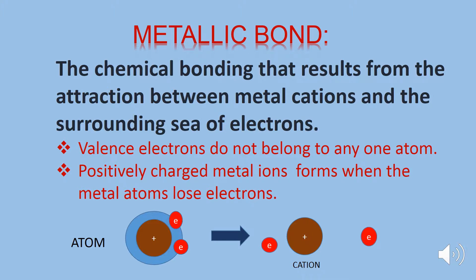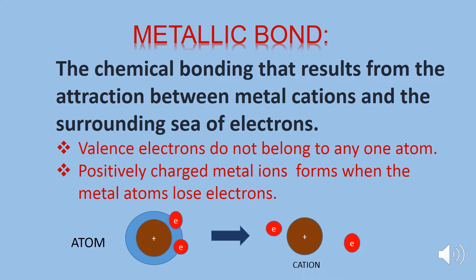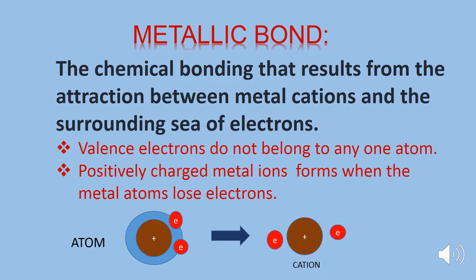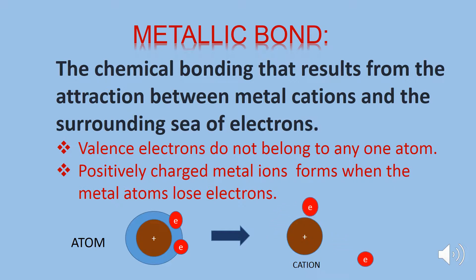So friends, what is metallic bond? The chemical bonding that results from the attraction between the metal cations and the surrounding sea of electrons is called metallic bond. Valence electrons do not belong to any one atom in case of metallic bond because these electrons are free to move.